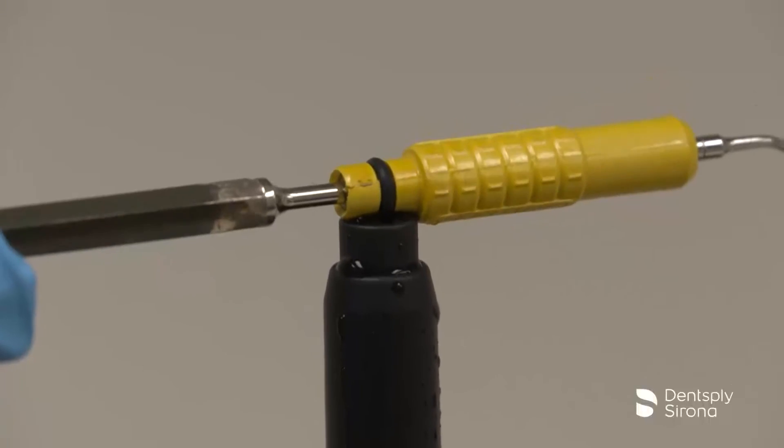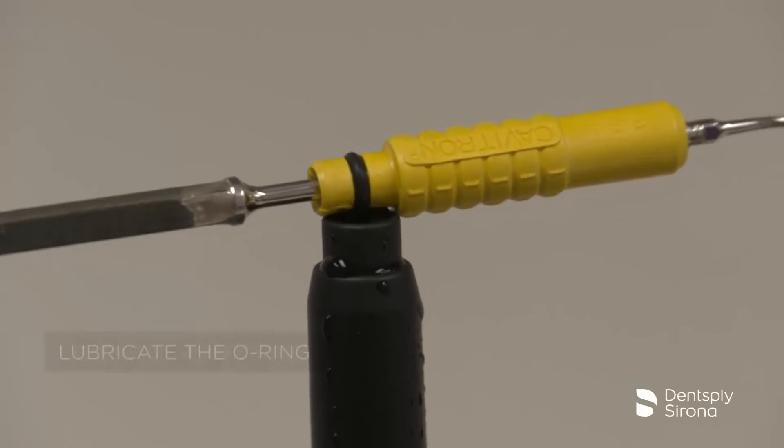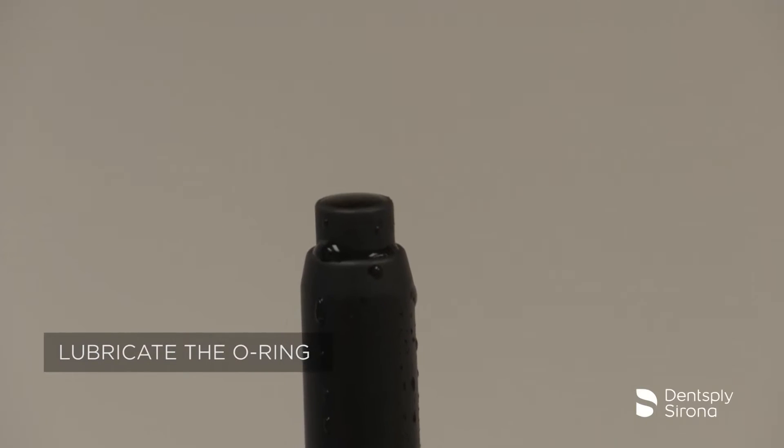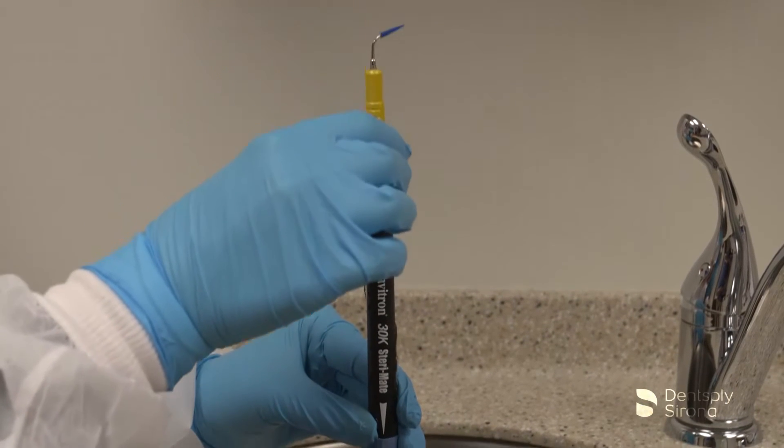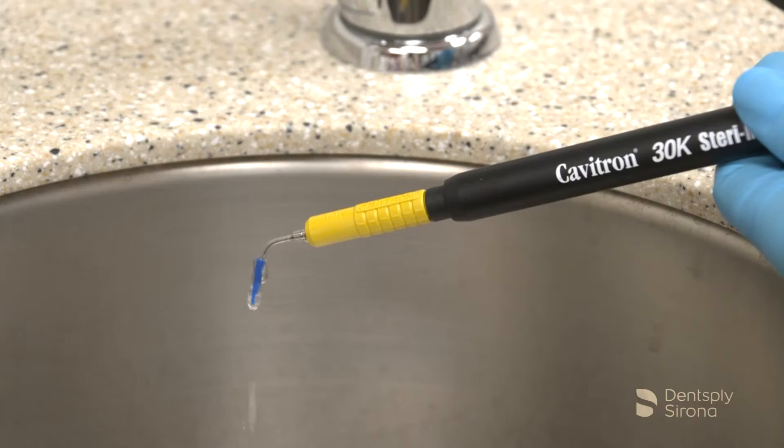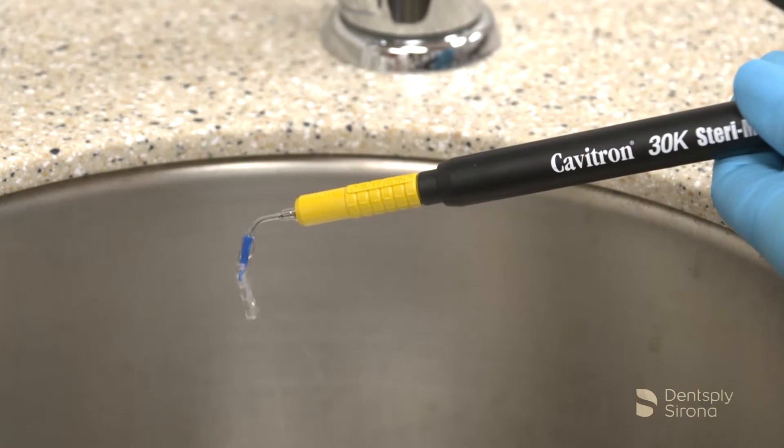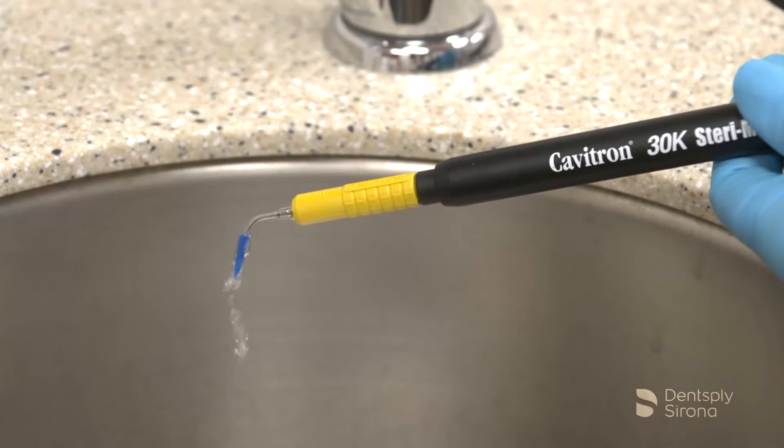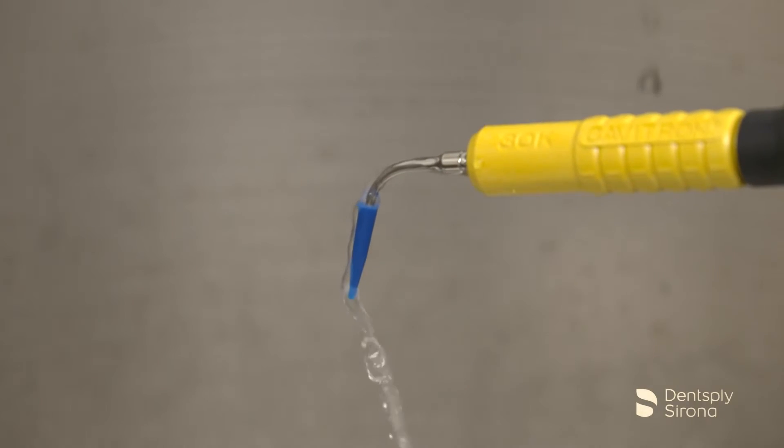After the clinician has placed the Soft-Tip Disposable Profi-Tip with the wrench included, filled the handpiece with water, seated the insert, selected the power, and adjusted the water flow to obtain a fine spray, instrumentation begins according to the treatment plan prescribed for the patient.